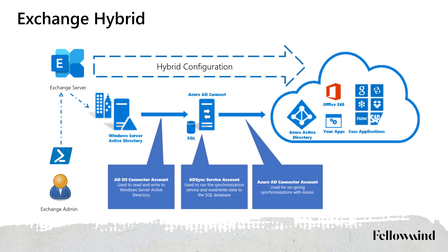After an administrator makes changes, the information will be propagated to Azure Active Directory. But we cannot turn off our on-premise Exchange Server. Why? Because our on-premise tools like Exchange Management Shell cannot work directly with Active Directory — it needs Exchange as a mediator. It works via on-premise Exchange. As soon as you turn off your on-premise Exchange Server, your Exchange Shell will stop working.